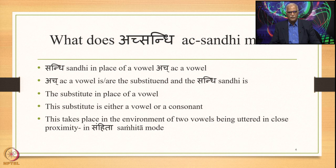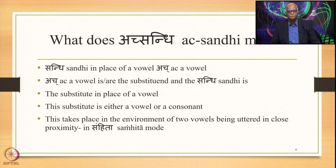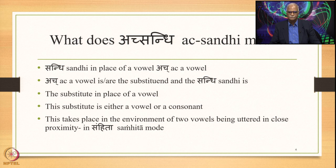In Acha Sandhi, Acha — that is, a vowel — is the substituent, and what is known as Acha Sandhi is the substitute in place of this substituent in the form of a vowel, or sometimes two vowels. This substitute is either a vowel or a consonant. The substituent is a vowel, and the substitute could be either a vowel or a consonant. Because of that, this is called Acha Sandhi.